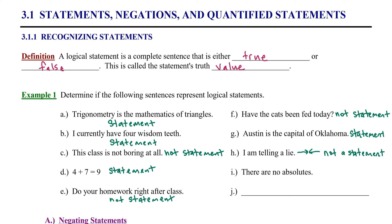Example I is similar. It says: there are no absolutes. Well, that statement itself is an absolute, so it has contradicted its own statement. The expression 'there are no absolutes' is itself an absolute, again contradicting the truth value it's trying to express. So this is another self-contradiction, and therefore it is not a statement.